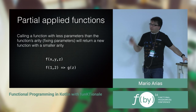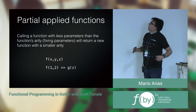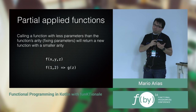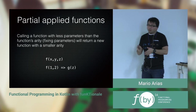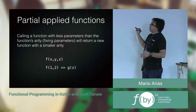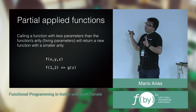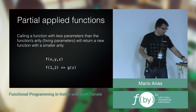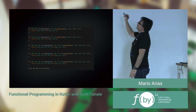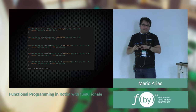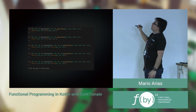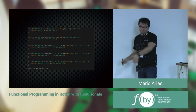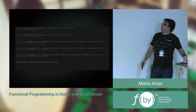Partial applied functions are different from currying. Partial application means calling a function with fewer parameters, and that returns a new function with only the parameters you didn't fix. So if I have a function with three parameters and call it with just two, it returns a function with one parameter. Because I'm doing this by hand rather than through the compiler, I need to create all variants from Function1 to Function22 — using a script, not manually.